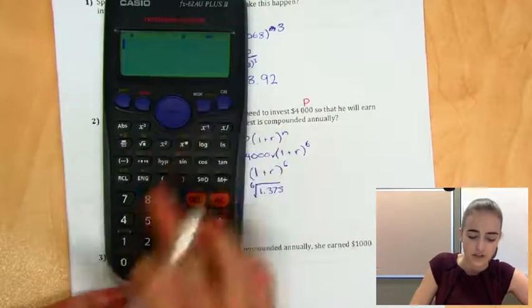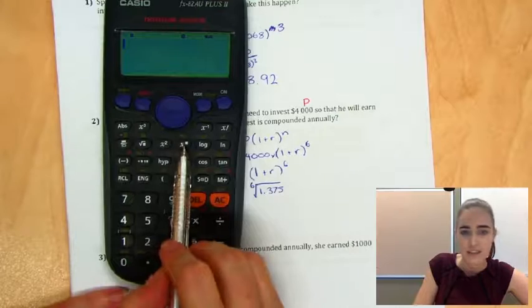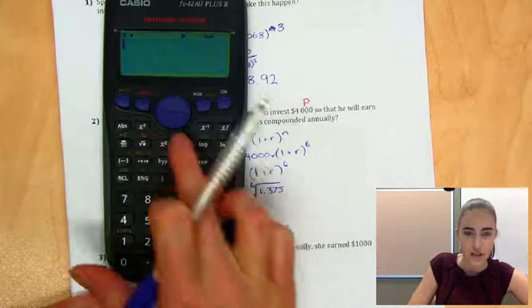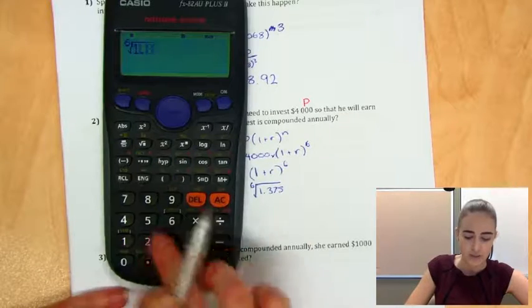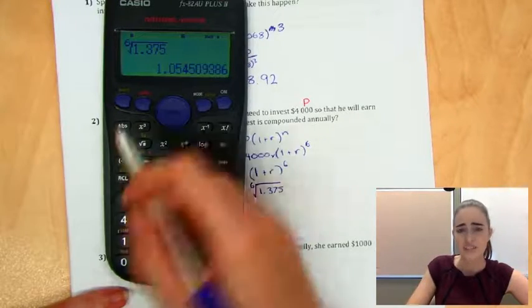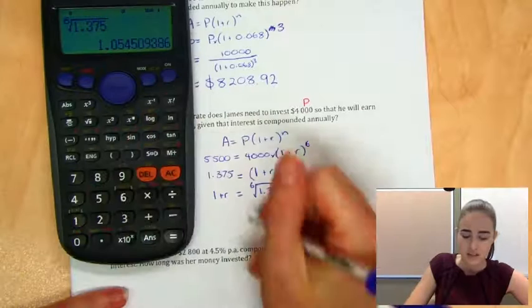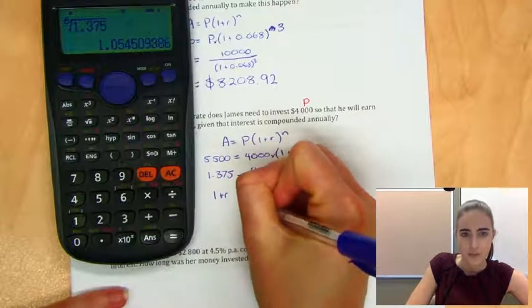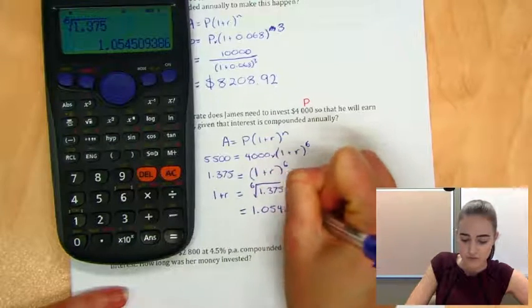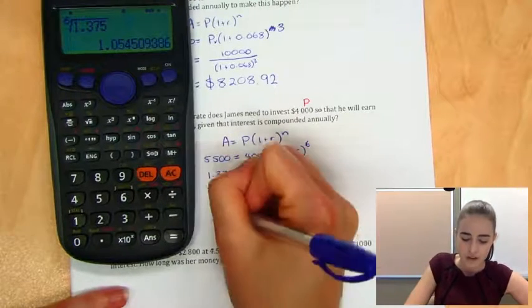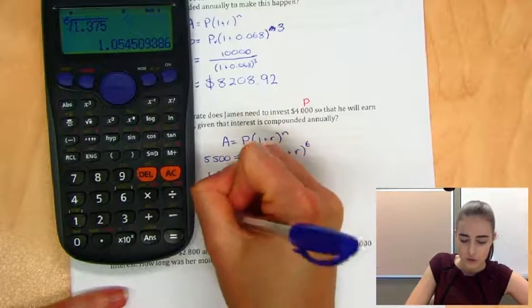So in our calculator, we're going to write above this key here. So we're going to go shift that button. We're going to put a six in there and 1.375, which gives us this huge, horrible thing. So we've got 1.0545, and we'll just put dot, dot, dot, because we know it keeps going. And that's our 1 plus R.